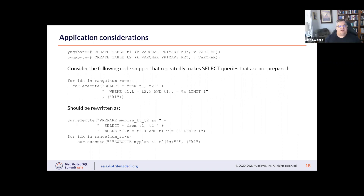Here's an example. Typically in an application we'll have a for loop where we join two tables on keys and pass a value into the statement each time. What we recommend is to prepare the statement beforehand and use variable markers within it so the statement can be parsed and planned once and then executed multiple times. This can help your performance greatly.